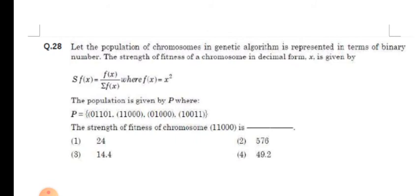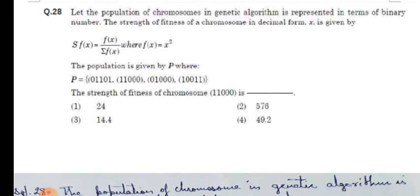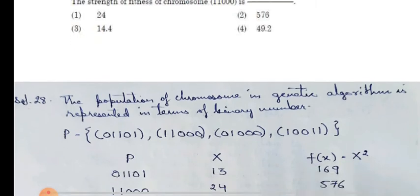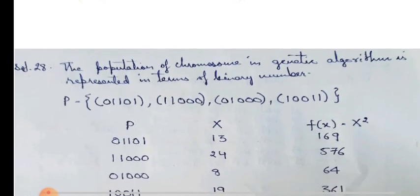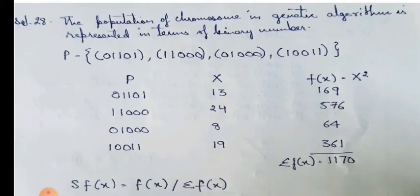In our next question, let the population of chromosomes in genetic algorithm is represented in terms of binary number. The strength of fitness of a chromosome in decimal form X is given by this function. The population is given by P, where P is, we have been given 4 pairs of binary numbers. So to calculate the strength, the population of chromosome in genetic algorithms is represented in terms of binary number. So we will take P, that is the population, X, the decimal representation of those binary numbers, and F(X) is equal to X square, the square of the decimal numbers.